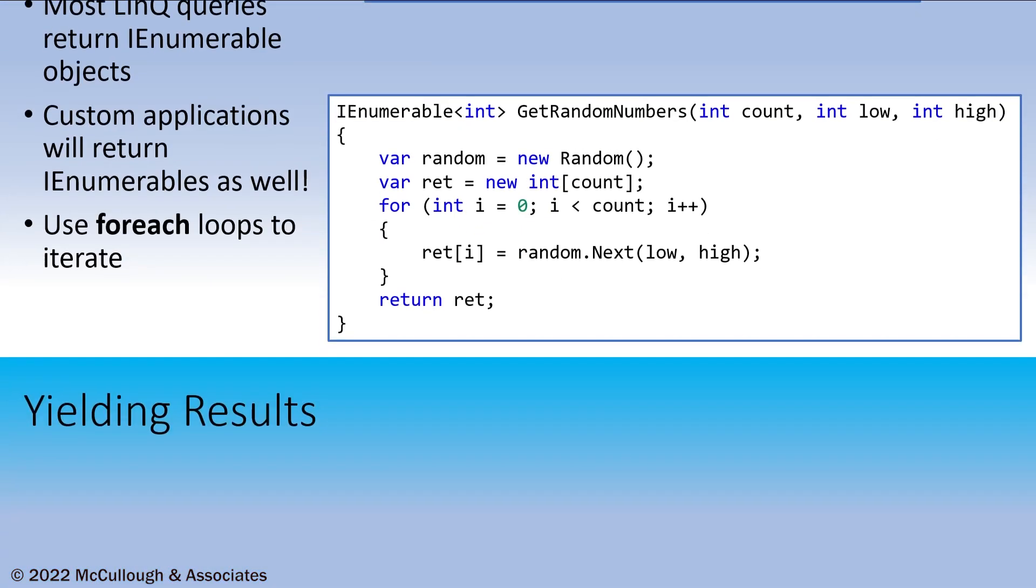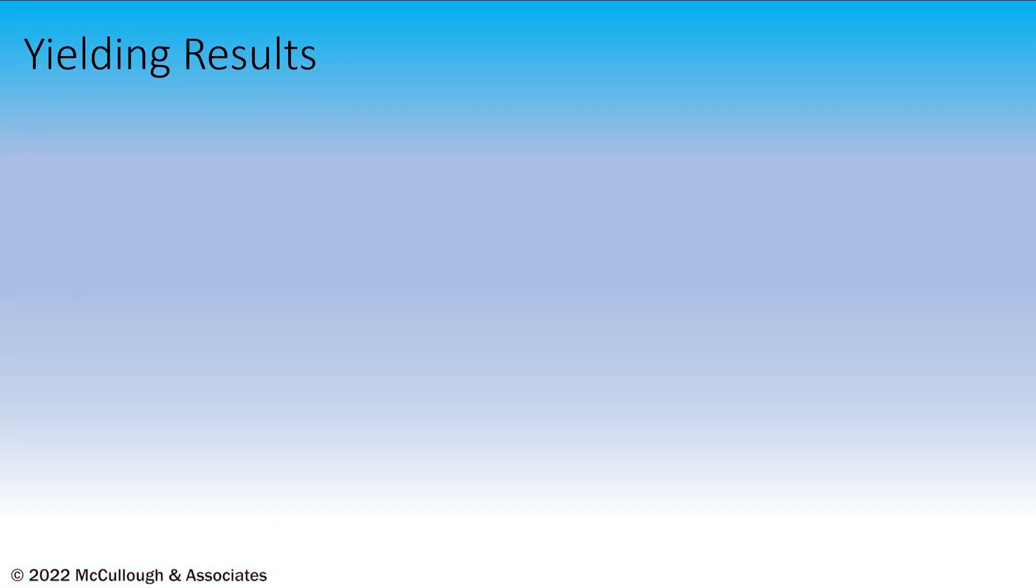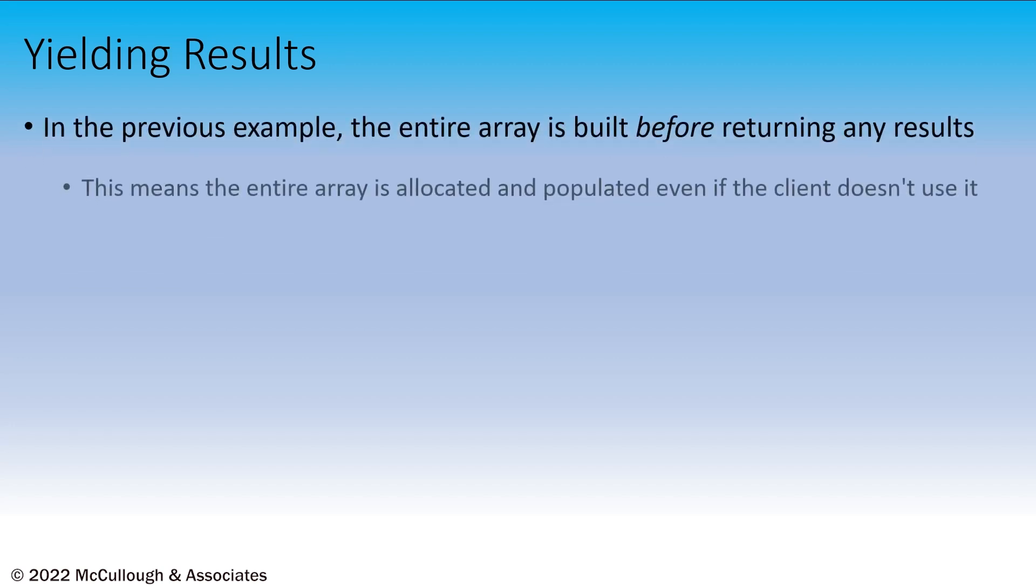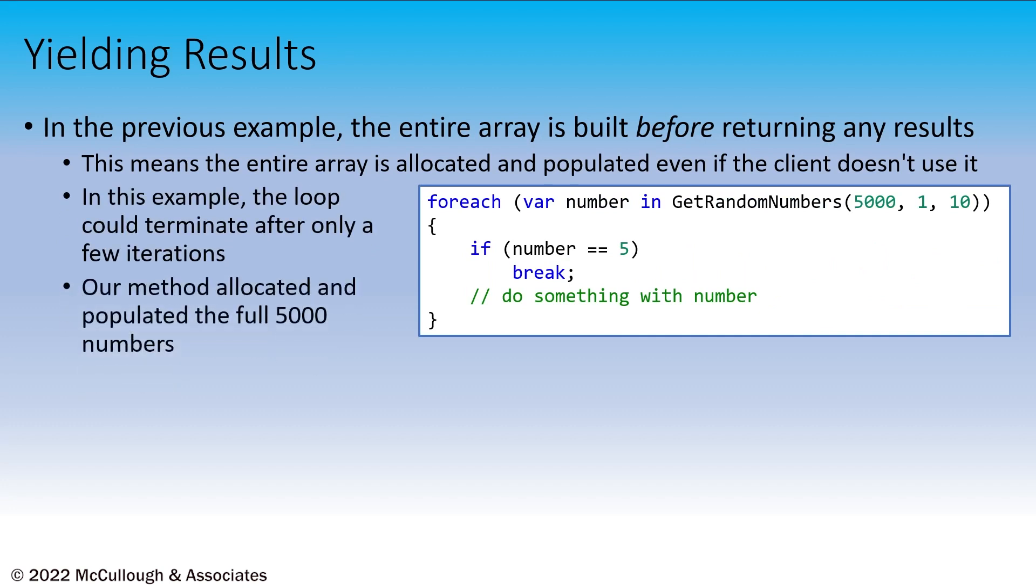This code works just fine, especially if the arrays are small and don't involve too much code to populate the array. But we are allocating and populating the entire array before returning any results. If this is a big array, that could be pretty expensive. If the client only looks at a few of the elements, then we wasted all that space and time creating the array. As shown in this example, our client stops looping when they encounter an element containing five. That could be the very first element. So, we've wasted all that time and space creating the additional elements in the array.